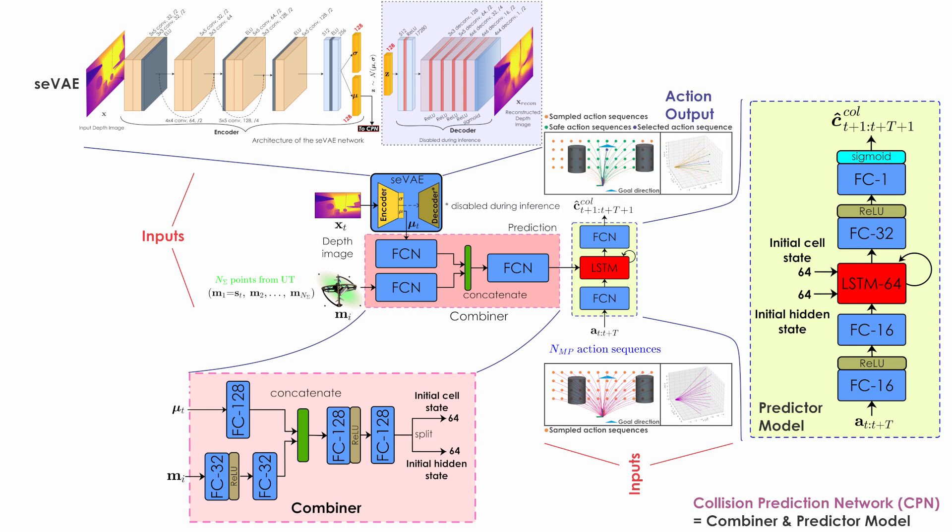Furthermore, the unscented transform is utilized to derive an uncertainty-aware collision cost for each action sequence in the motion primitives library. Finally, a set of safe action sequences are thresholded based on the calculated collision cost, and the optimal action sequence enabling the robot to safely navigate along the goal vector is chosen.